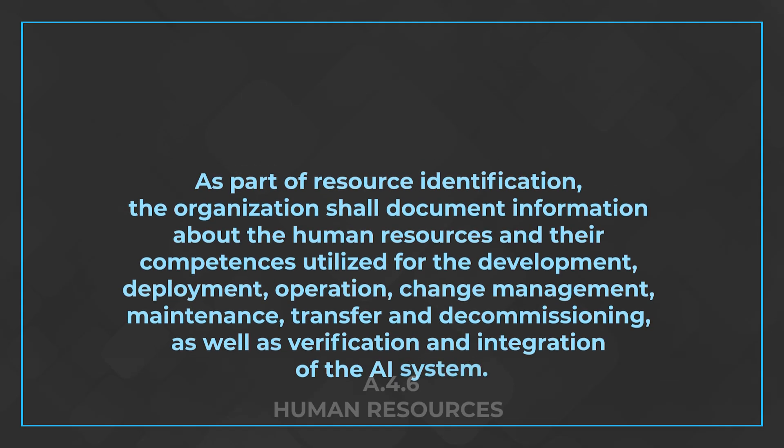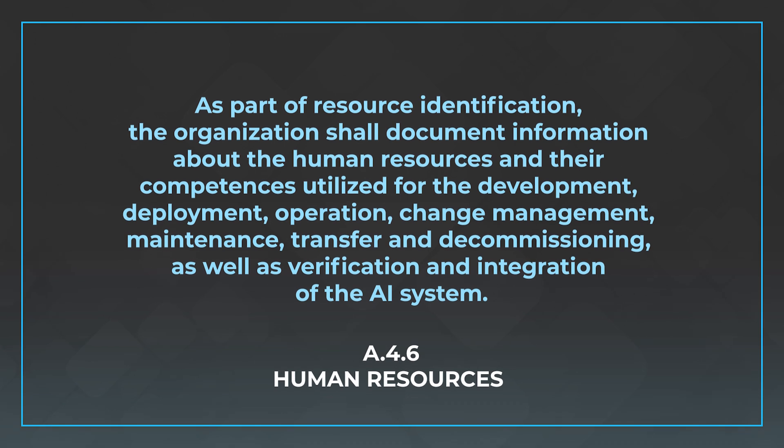It ends with a control around human resources — A.4.6. That control is specifically talking about the involvement of HR in this process. It says: as part of resource identification the organization shall document information about the human resources and their competences utilized for the development, deployment, operation, change management, maintenance, transfer, and decommissioning, as well as the verification and integration of the AI system. That means: who are the people involved, what do they need to know, and what do I need to make sure they're able to do as part of this system?